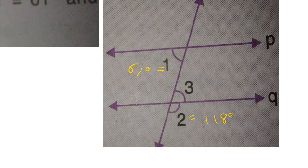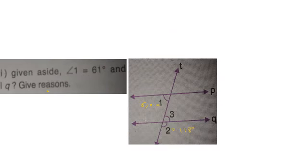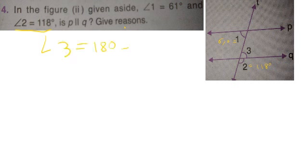So angle 3 will be equal to what? Let us find it out. Angle 3 is equal to 180 minus 118, because 118 is angle 2 and both of them lie on a straight line. Both of these angles are a linear pair. So angle 3 is basically equal to 62 degrees.